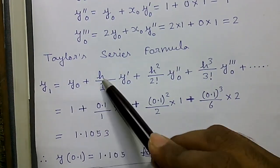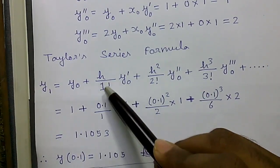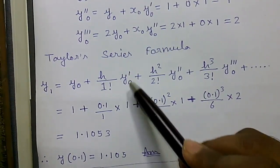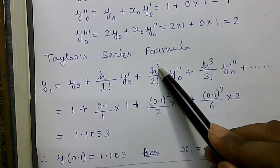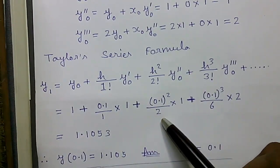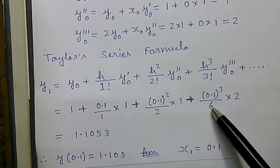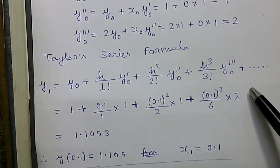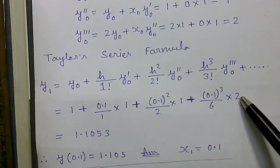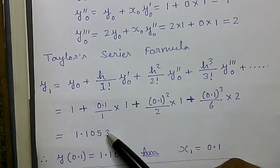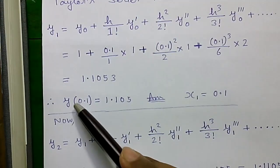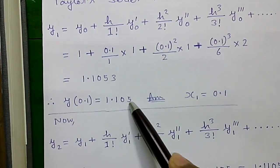Now we will put the values: y0 is 1, h is 0.1 divided by factorial of 1 into y'0 that is 1, plus h²/2! into y''0, plus h³/3! which is 6 into y'''0. So you will get 1.1053, that is y(0.1) = 1.105.